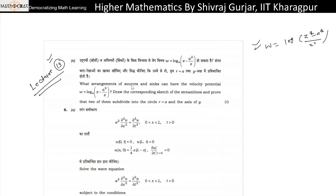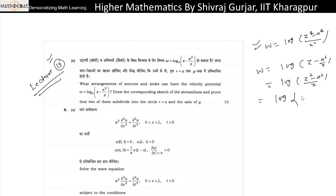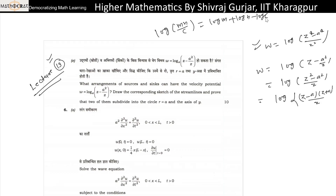We have to follow a set process: what arrangement of source and things can have this velocity potential. This w is log(z - a)² / z. So this can be written as log(z² - a²) / z, or as log(z - a)(z + a) / z. We know that log(mn/c) = log m + log n - log c. So this will be log(z - a) + log(z + a) - log z.